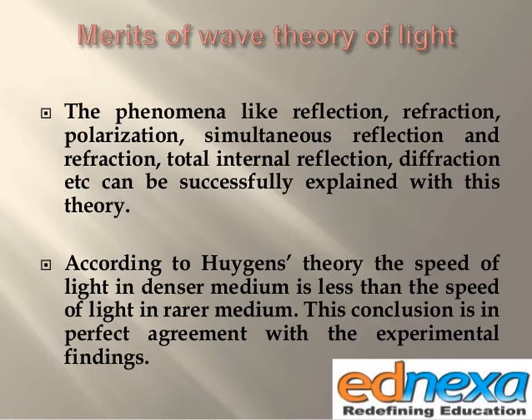The light waves can explain simultaneous reflection and refraction, total internal reflection, and diffraction. All these phenomena can be successfully explained with the help of this theory. According to Huygens' theory, the speed of light in a denser medium is less than the speed of light in a rarer medium. This conclusion is in perfect agreement with the experimental findings.